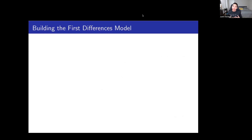The goal of panel data models is to eliminate this unobserved heterogeneity component. The very first approach to do that is referred to as the first differences model, which we'll be discussing in the next video. Thank you for your attention, and I'll see you in the next video.